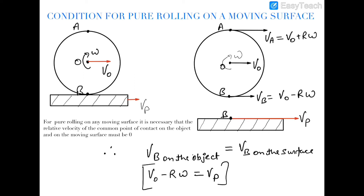We assume that v-naught is greater than r·omega because we need to equate the velocity v-naught minus r·omega with vp, and vp is in the forward direction. Therefore vb must also be in the forward direction, which requires v-naught to be greater than r·omega. For the pure rolling condition, the velocity of point B on the ring and the velocity of point B on the plank should be equal: vb equals vp, so v-naught minus r·omega equals vp. This is the condition of pure rolling on a moving surface.